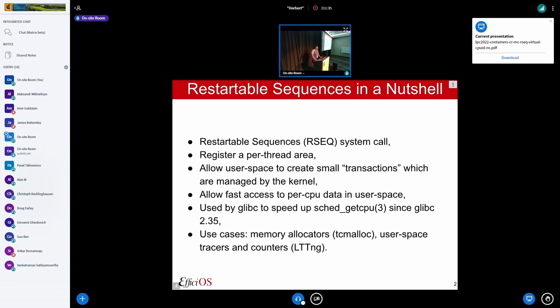Just a quick explanation of what restartable sequence is and allows doing. So it's a system call that I pushed into the Linux kernel. It registers a per-thread area. User space registers a per-thread area and that's glibc doing it since version 2.35. It allows user space to create small transactions which are managed by the kernel. And those transactions allow fast access to per CPU data in user space.